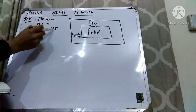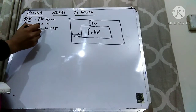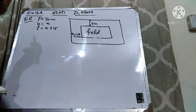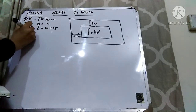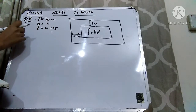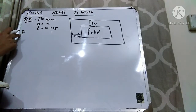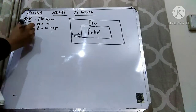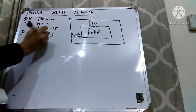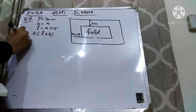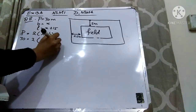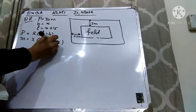Now I am going to write down the formula for the perimeter of the rectangular field. Perimeter of any rectangular shape is: Perimeter equals 2 times (length plus breadth). Here I am going to put the values. Perimeter we know is 70. Length is x plus 15, and breadth is x.